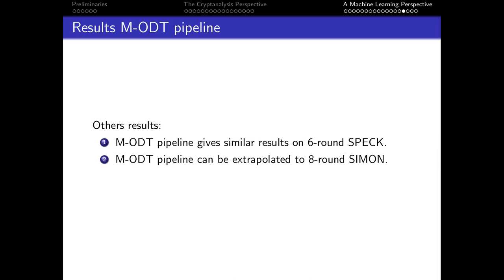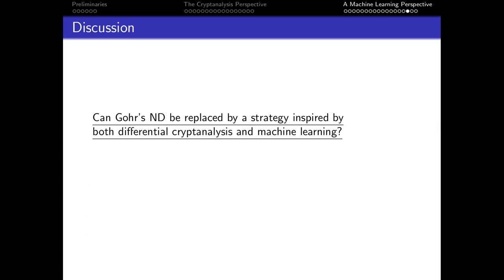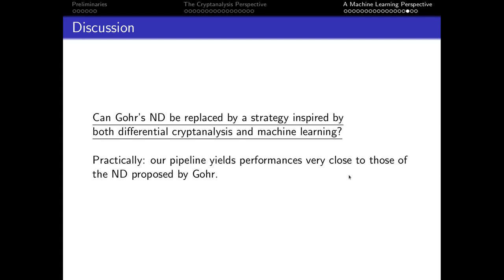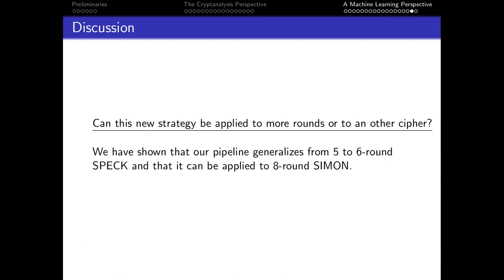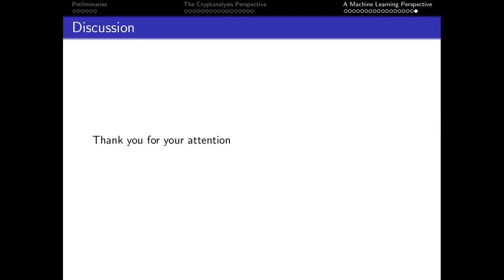As additional results shown in the paper, we also extended our pipeline to 6-round SPECK and managed to extrapolate it to 8-round TINE. In conclusion, can Gohr's neural distinguisher be replaced by a strategy inspired by differential cryptanalysis and machine learning? Practically, almost — our pipeline yields performance very close to the neural distinguisher. And can this new strategy be applied to more rounds or another cipher? Yes — we have shown generalization from 5 to 6 rounds of SPECK and application to 8-round TINE. Thank you very much for your attention.